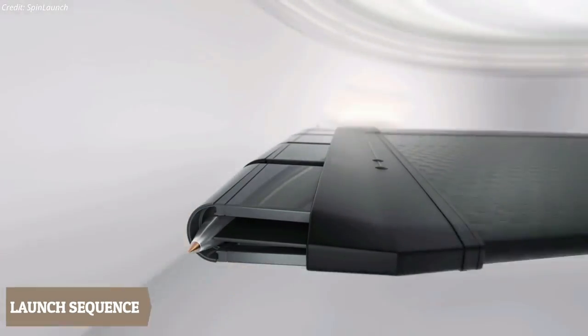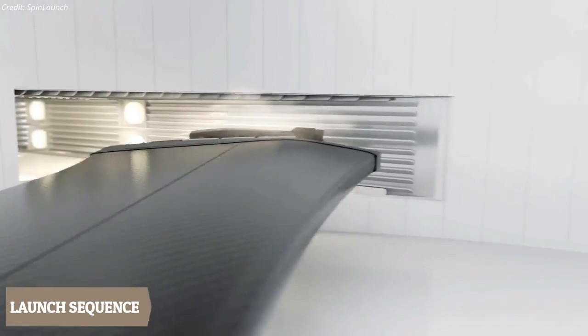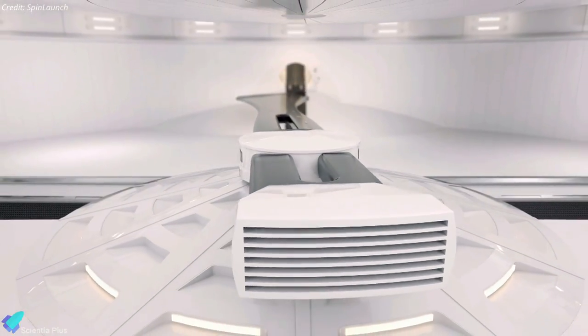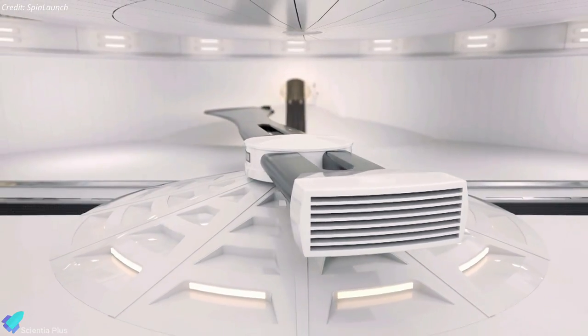As the rocket spins in the centrifuge, a port will open for a fraction of a second to let the rocket shoot out. A counterbalance that spins in the opposite direction will also be released to prevent the tether from becoming unbalanced.